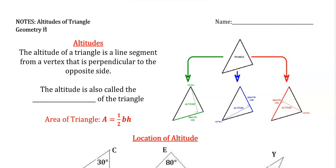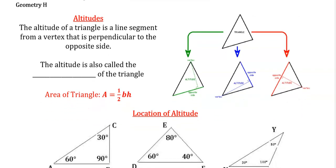This video we're going to talk about altitudes, and more specifically, how we can create the equations of lines of altitudes on our coordinate plane. Beginning with what an altitude is — in general it is a line segment that connects the vertex of one side of a triangle to the opposite side of it, and in particular, that opposite side is perpendicular to it.